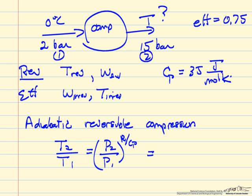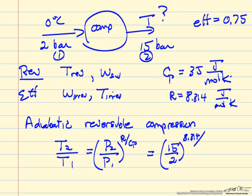The pressure, final pressure 15, initial pressure 2. The gas constant R is 8.314 in units of joules per mole Kelvin. So 8.314 over 35.